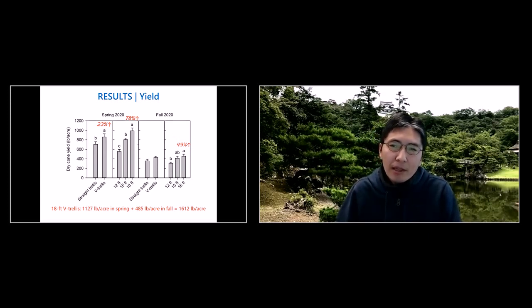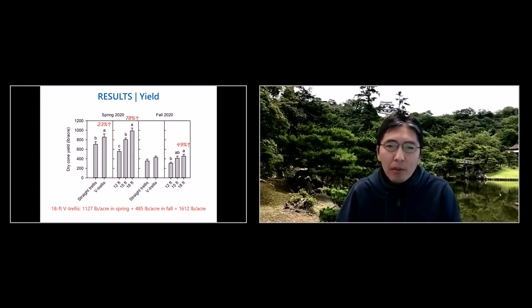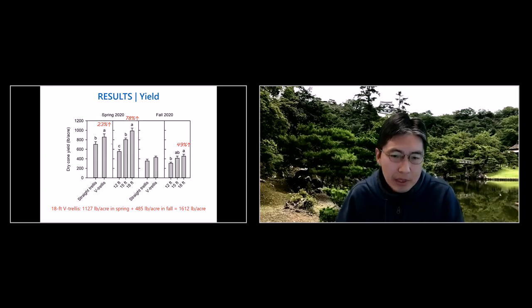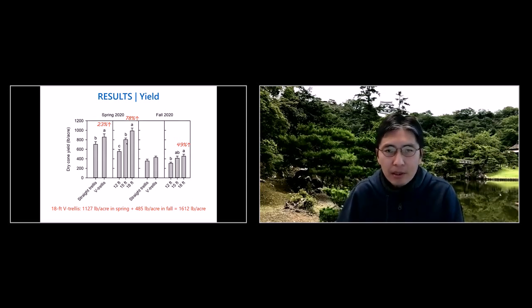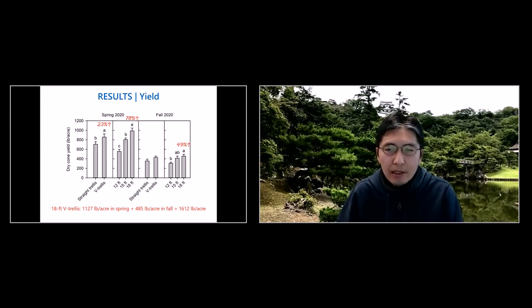We found that trellis height had an impact on vine distribution and also cone distribution — more uniform vine and cone distribution with the V trellis. For yield data, we found that the V trellis is more productive than the straight trellis: 23% higher yield in the spring, and the same increase in fall though only statistically significant in the spring. Increasing trellis height from 12 to 18 feet increased yield by 78% in the spring season and 49% in the fall season. The fall yield was overall about 50% of the spring season, a trend seen over the last couple of years.